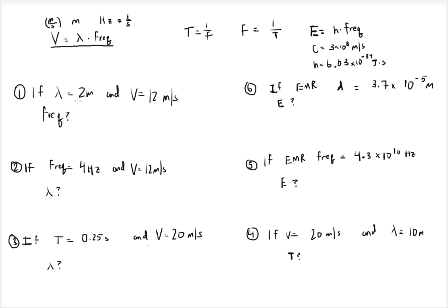Say I give you a wavelength of 2 meters and a velocity of 12 meters per second — how do you find frequency? We need to get frequency by itself, so we divide both sides by wavelength, giving us velocity divided by wavelength equals frequency. So we get 12 meters per second divided by 2 meters. The meters cancel out, leaving 1 over seconds, which are Hertz — so you get 6 Hertz.